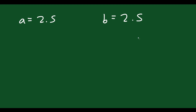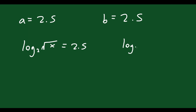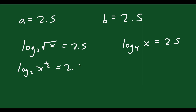The way to solve for x is to take either of those and set it equal to 2.5. You could say log base 2 of the square root of x equals 2.5, or log base 4 of x equals 2.5 — just solve for x in either case and you'll get the same answer.